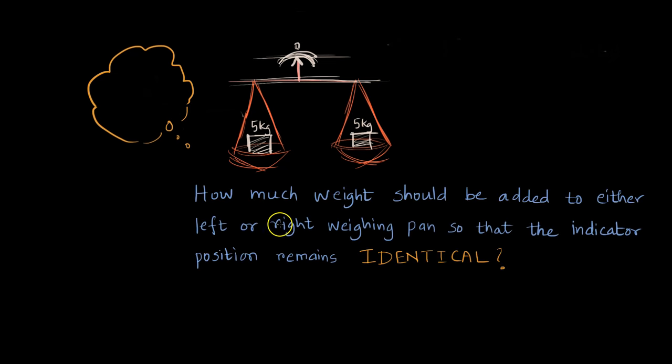Now the question is how much weight should be added to either left or right weighing pan so that the indicator position remains identical.